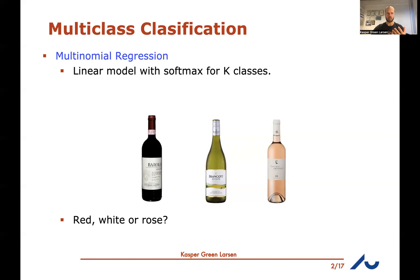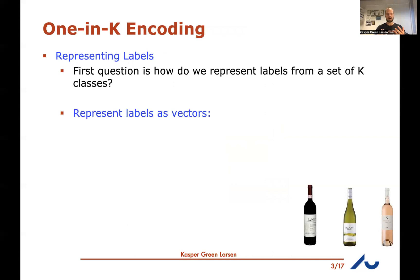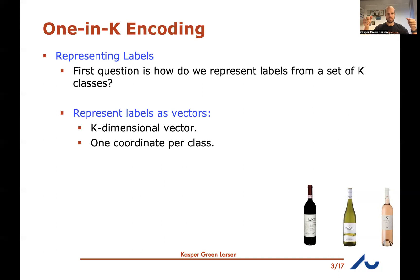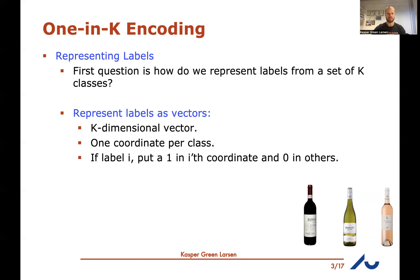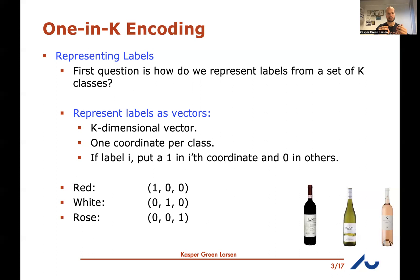We use a special representation of labels: the one-in-K encoding. Since we have more than two labels, we don't use minus one and plus one. Instead, if we have K different classes, a label is represented as a vector with K entries where the i-th coordinate is one if the label is the i-th class and zero everywhere else.